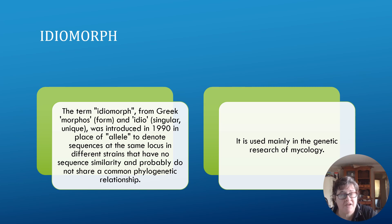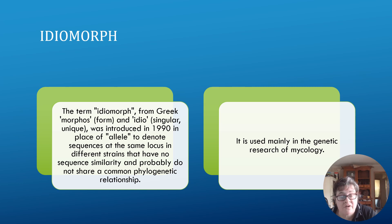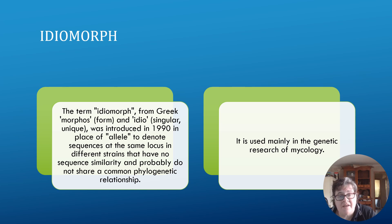The term 'idiomorph,' from the Greek 'morphos,' was introduced in 1990 to denote sequences at the same locus in different strains that have no sequence similarity and probably do not share a common phylogenetic relationship. This term is used mainly in the research of mycology — the study of fungi. That concludes this presentation on alleles. As mentioned, research into this topic further on your own.